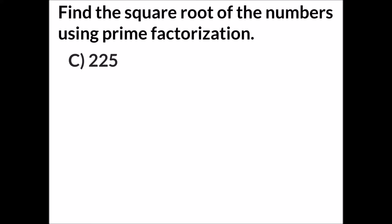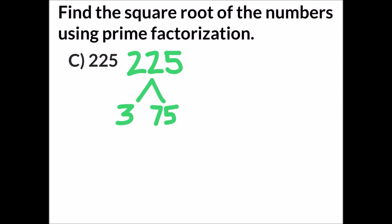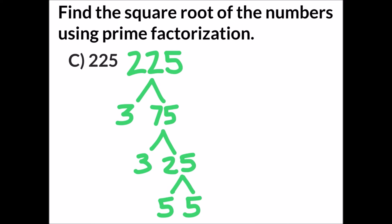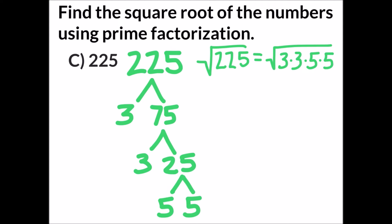The third example asks us to find the square root of 225 using prime factorization. We start with the prime factor tree: 3 and 75 are factors of 225, 3 and 25 are factors of 75, and 5 and 5 are factors of 25. The square root of 225 equals the square root of 3 times 3 times 5 times 5. Our goal is to look at those numbers in expanded form and put them into identical pairs.